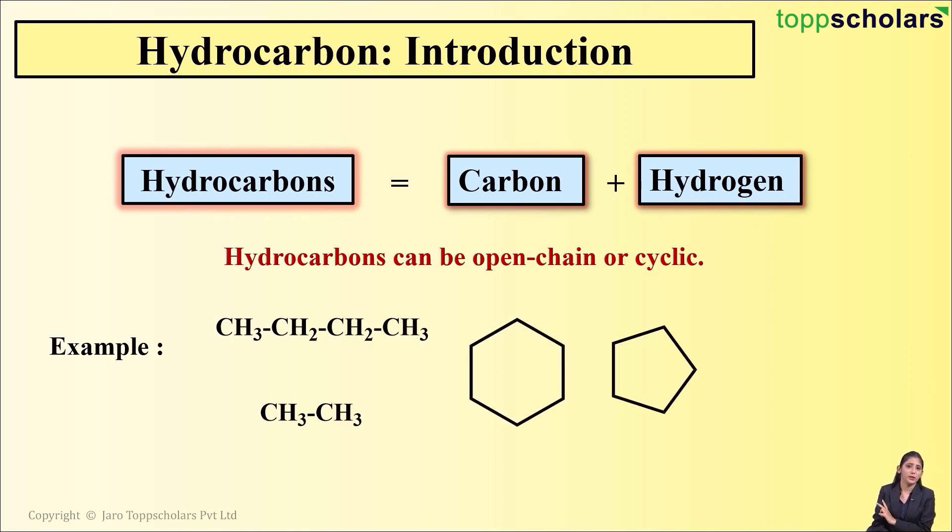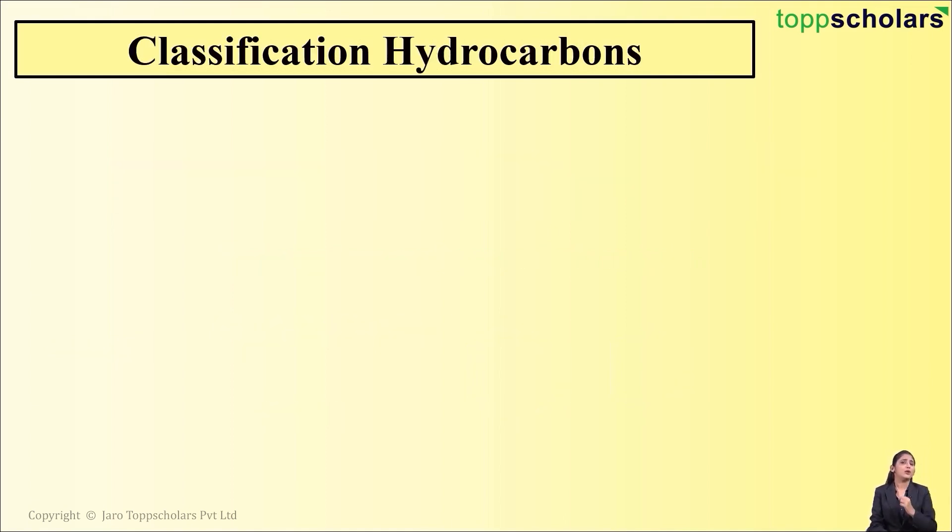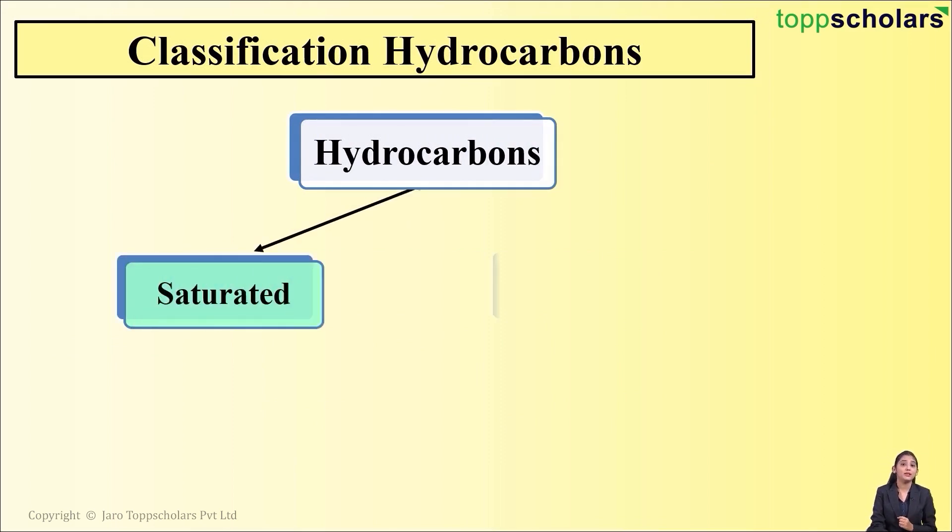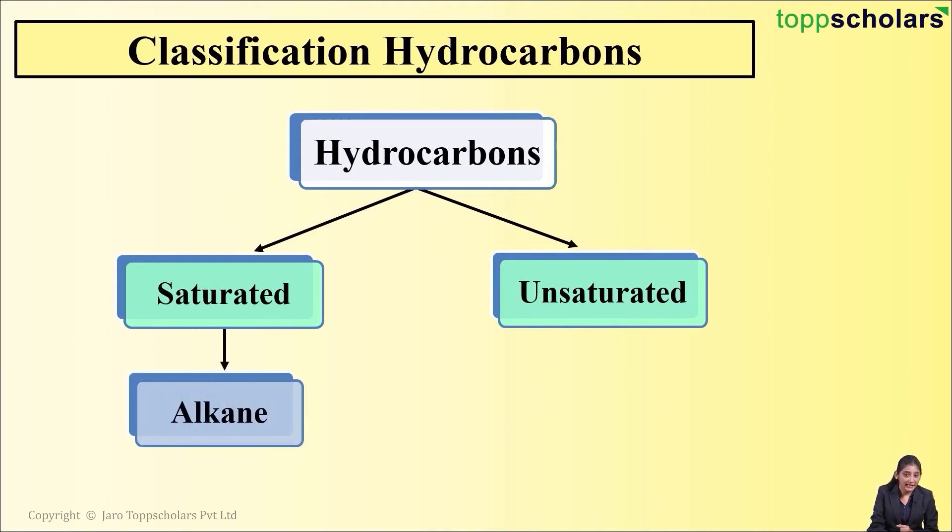Now, these hydrocarbons are broadly classified into saturated hydrocarbons and unsaturated hydrocarbons. Saturated hydrocarbons are also called alkanes, whereas unsaturated hydrocarbons are of two types - alkenes and alkynes. Let's first discuss what we mean by saturated hydrocarbons.